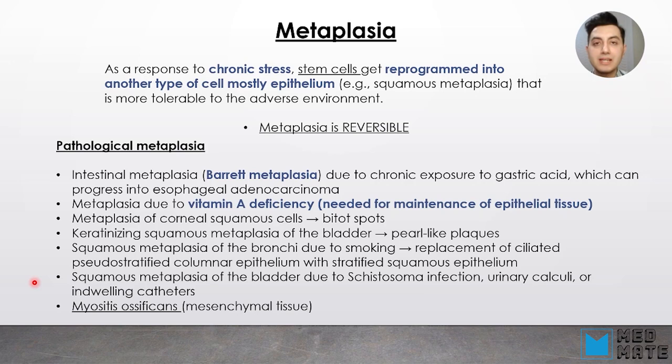Other examples of metaplasia include squamous metaplasia of bronchi, seen in chronic smokers, where there is replacement of ciliated pseudostratified columnar epithelium with stratified squamous epithelium. Squamous metaplasia of the bladder can also happen due to schistosomal infection or other infections, or when there are indwelling catheters. Another important example is myositis ossificans, which is metaplasia of mesenchymal tissue.